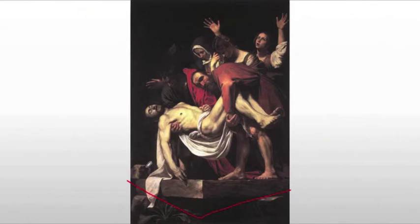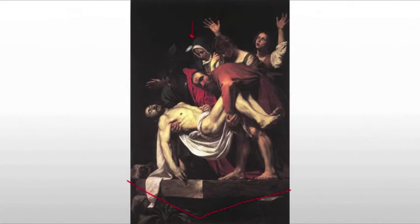The body of Christ is being laid on the slab inside the tomb. We see mourners around, and we see the Virgin Mary, who looks much older than Michelangelo and others depict her — more realistically aged, considering Jesus is 33 at the time and she'd probably be in her 50s. We see other mourners, some very vocal, some more stoic, and we see the strain of the men who are carrying the body.